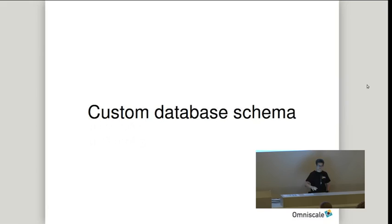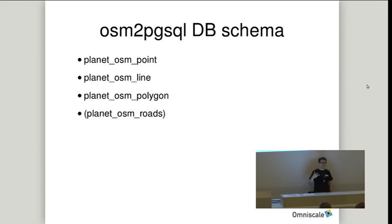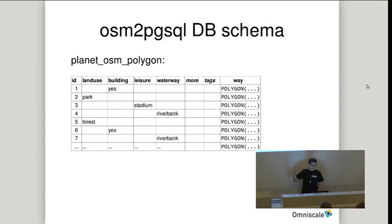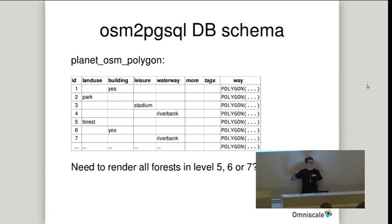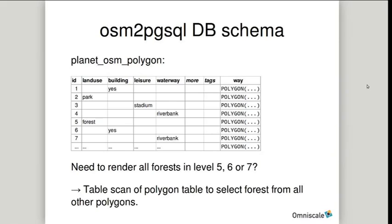Custom database schema is also a feature we wanted. With OSM2PGSQL you basically have three tables: one for points, one for lines, and one for roads. A polygon table has the ID, a column for each tag, and then the geometry. The problem is when you want to render all forests at zoom levels 5, 6, or 7 with an import of Germany or Europe — the spatial index doesn't work because you want to render your entire extent. PostgreSQL needs to do a full table scan, checking all rows and filtering out only the forest rows, which can become quite slow.